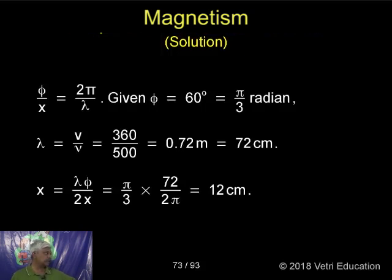That is x is equal to lambda phi by 2 pi. Phi by x is equal to 2 pi by lambda. So x can be calculated very simply, equals 12 centimeters.